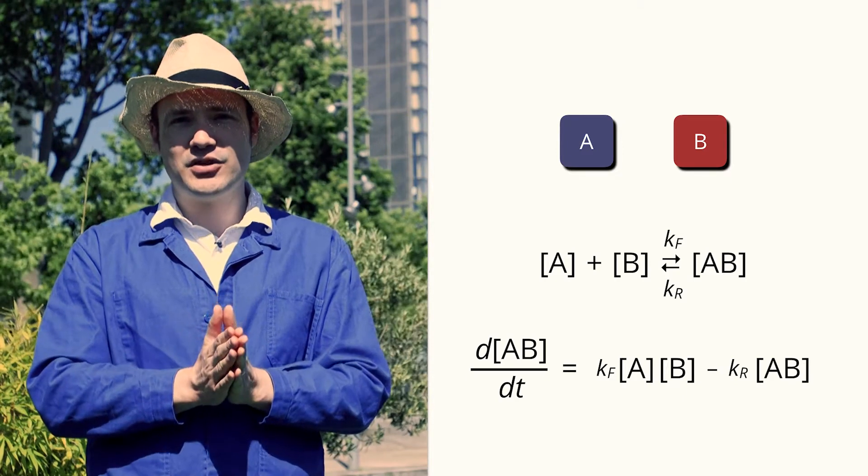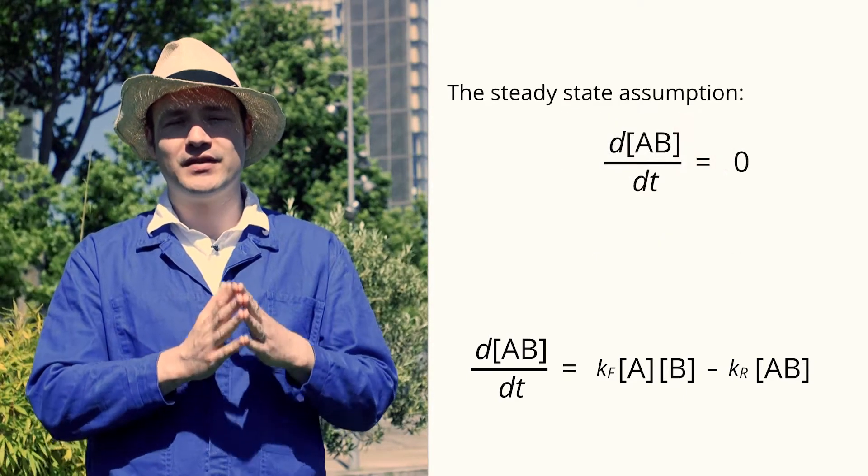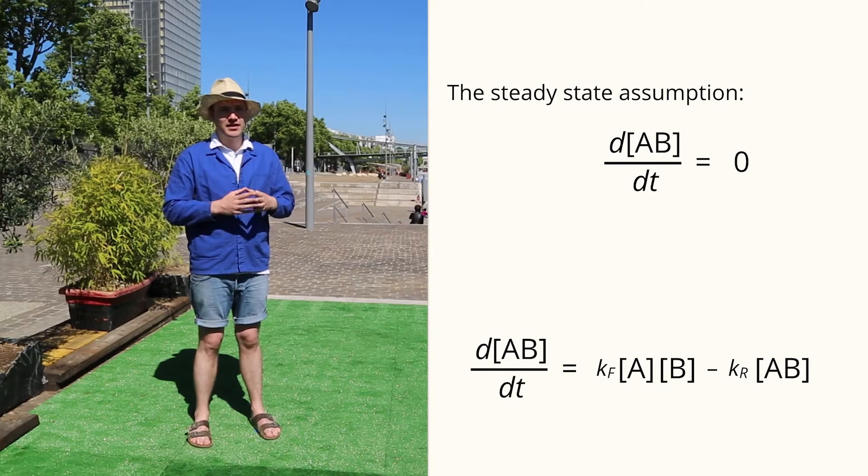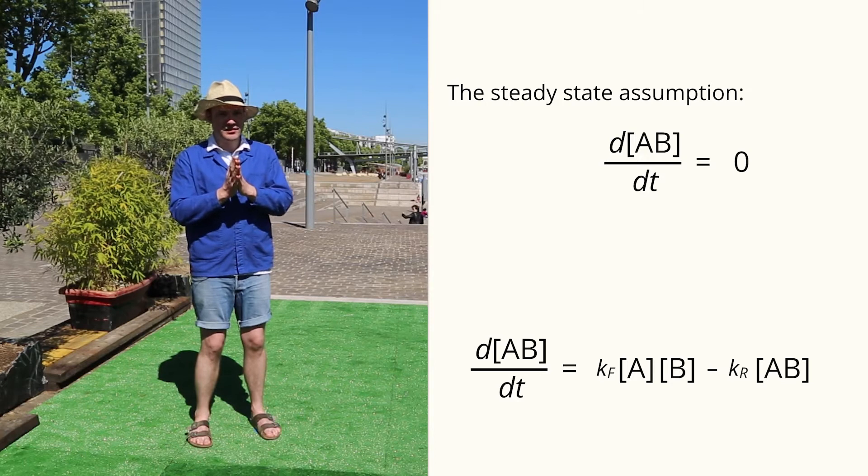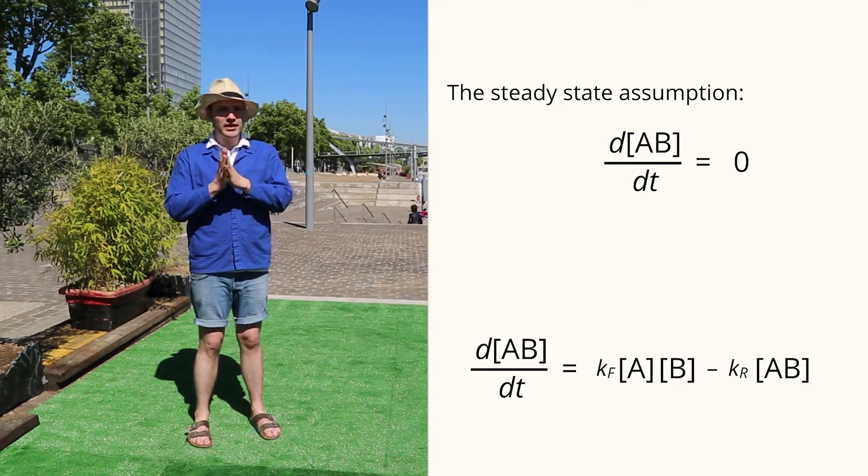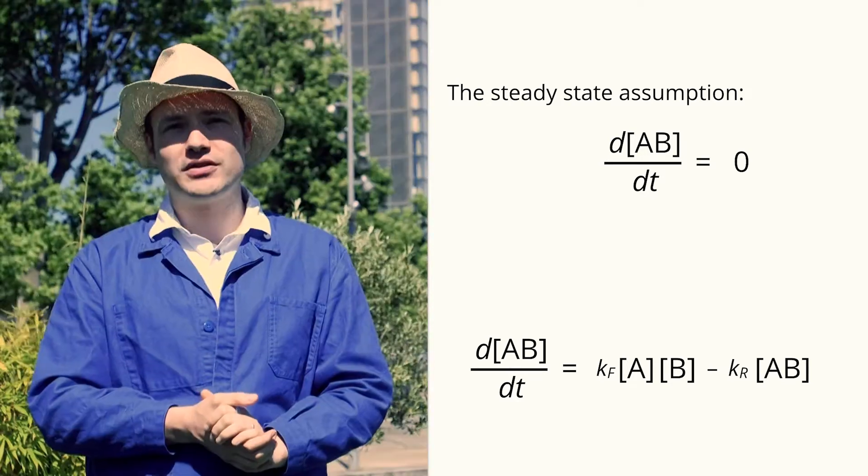To calculate this, we make a key assumption, the steady state assumption. That means we're looking at the system A, B, AB at a point when concentrations are no longer changing over time.